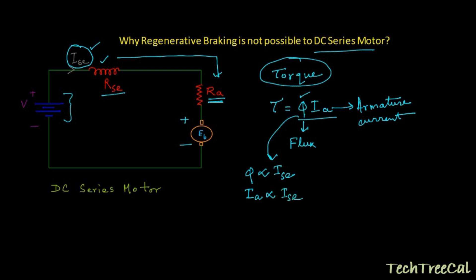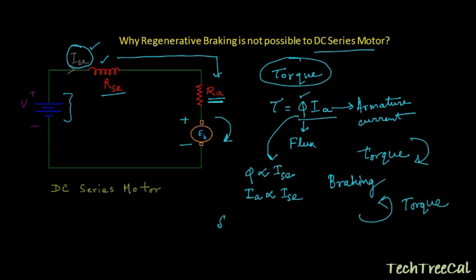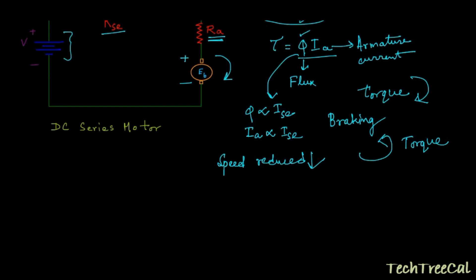For braking, suppose the motor is rotating in a clockwise direction, so the torque is also in the clockwise direction. For braking of the motor, what we really need to do is to generate an anti-clockwise torque so that the speed of the motor gets reduced. Torque is proportional to flux and armature current.